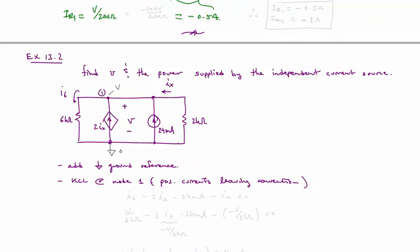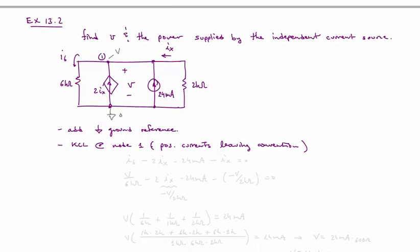Let's look at one more example. Here we're asked to find V and the power supplied by the independent current source. So this guy right here, the 24 milliamp source. So again, first we're going to add a reference, a ground. Then we'll label the other node with our voltage V. That's what we're going to solve for.